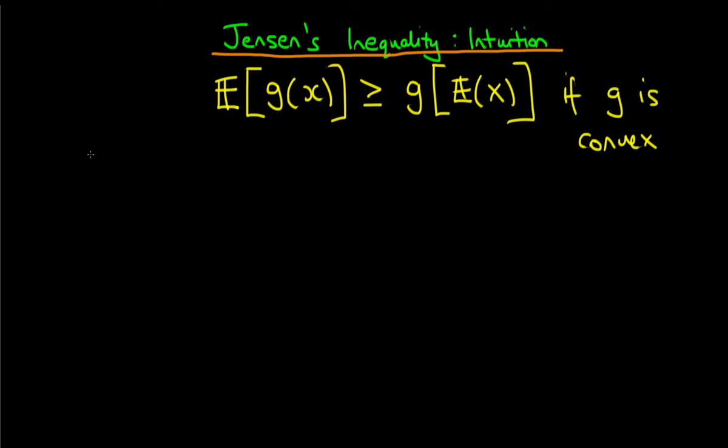In order to explain the intuition behind Jensen's inequality, we're first going to talk about an example. The example is: imagine that we're throwing a die — a cube which has numbers 1 to 6 on it. We represent that value, which we call x, and it can take on the values 1, 2, 3, 4, 5, or 6. If it's a fair die, we can assume that the probability of obtaining any particular value of x is 1/6 in all cases.